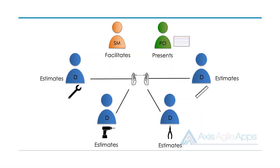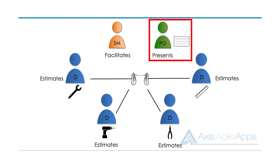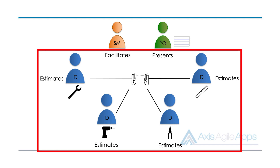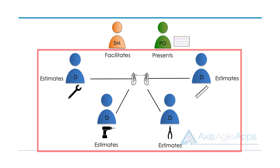The big idea behind planning poker is that we use the wisdom of a crowd to triangulate in on a value. In Scrum, that crowd is the Scrum team. Depending on what role you play, you contribute differently. The Scrum master facilitates the process. The product owner takes the team through the requirements, describing and helping them understand the work so they can estimate story points. The developers are the ones who decide on the story point value.